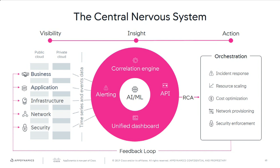And this is a big deal. What we're giving you is a central nervous system that's starting to pull information and telemetry from any part of your technology stack and start to co-mingle that information, so you can really understand the deeper impact of a network change, an infrastructure change, or an application change on your end user experience.